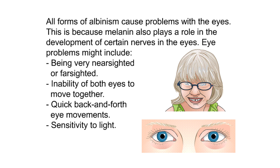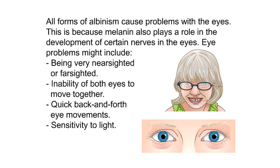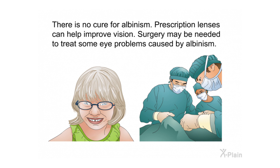All forms of albinism cause problems with the eyes, because melanin also plays a role in the development of certain nerves in the eyes. Eye problems might include being very nearsighted or farsighted, inability of both eyes to move together, quick back-and-forth eye movements, and sensitivity to light. There is no cure for albinism. Prescription lenses can help improve vision, and surgery may be needed to treat some eye problems caused by albinism.